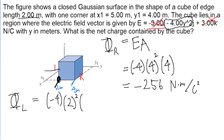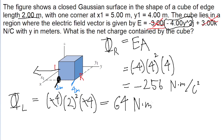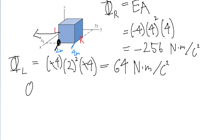But on the left face, the normal to the area is pointing in the negative y direction, so the area is actually negative 4. The negatives will cancel out, and we should expect a positive result for the leftward flux. And sure enough, putting this into a calculator, we get a flux of 64 newton meters per coulomb squared.